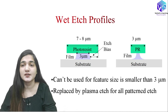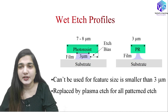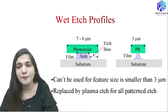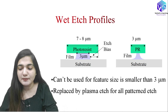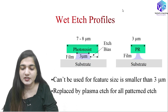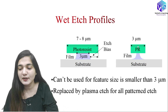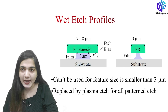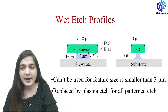Wet etching is not very desirable today because it is only suitable for larger feature sizes. As technology advances, we move toward smaller and smaller feature sizes. Wet etching can only be used for a minimum feature size of 3 micrometers — below that it cannot be used. You can see in the wet etching profile: for feature sizes around 7–8 micrometers, etching is best; for sizes below 3 micrometers, the etching profile is worst. In those cases, we must use dry etching — also called plasma etching — for all patterning purposes.